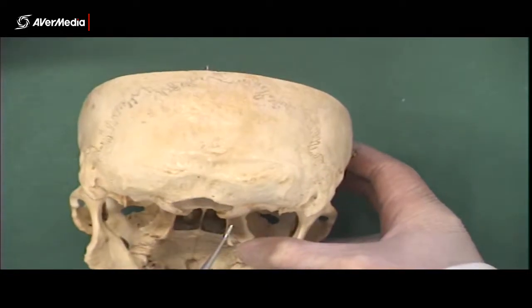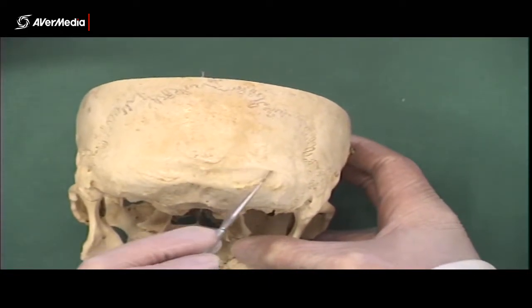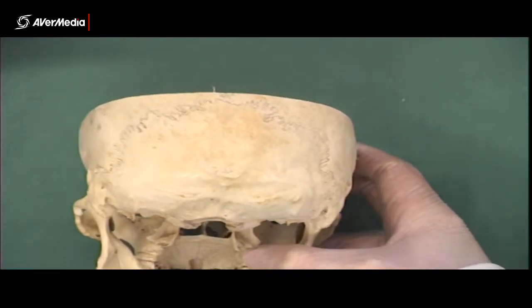We've got a superior nuchal line and an inferior nuchal line. Now they're not always going to be all that visible, but on this one they're pretty good. So superior nuchal line and then inferior nuchal line here.